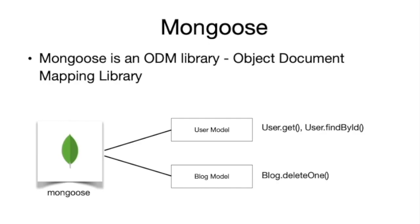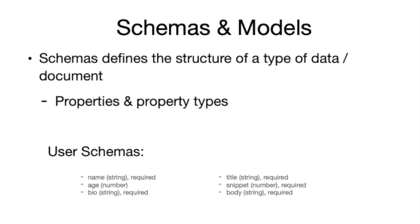Hello everyone and welcome back to the Node.js course. In this lesson you will learn about Mongoose. Mongoose is an ODM library — an object document mapping library — that wraps the standard MongoDB API and provides us with a much easier way to connect to and communicate with the database. It does this by allowing us to create simple data models which have database query methods to create, get, delete, and update database documents.